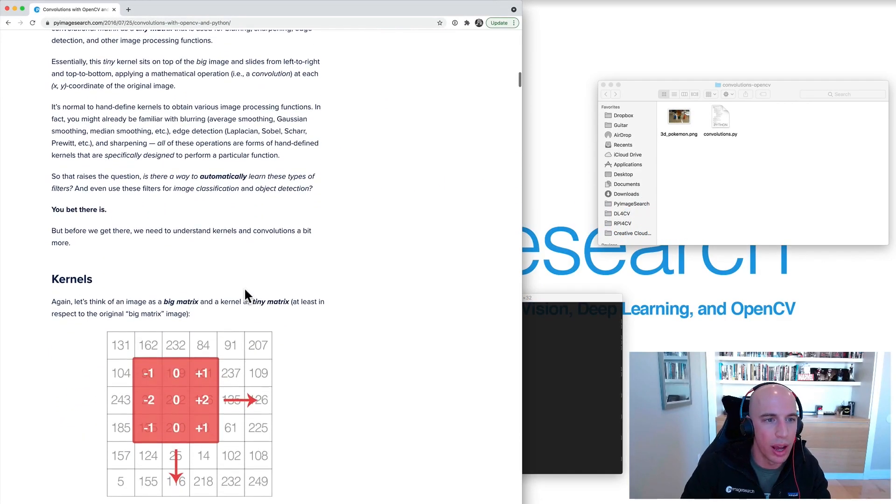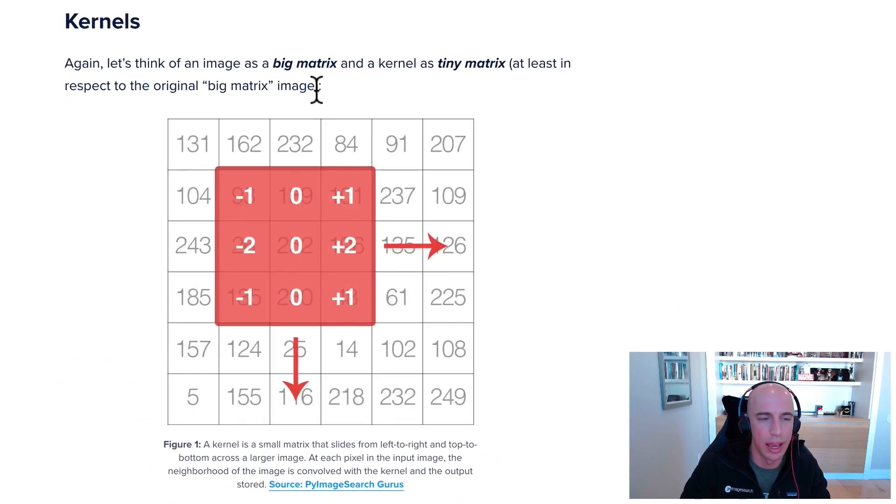I like to describe kernels and convolutions using the concept of a big matrix and a tiny matrix. This big matrix here is your input image—these are presumably a single channel grayscale image, and these pixel values in gray are the individual pixel intensities of the image.